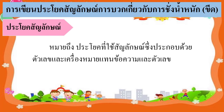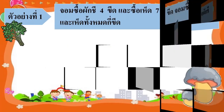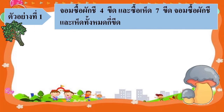ถ้าพร้อมแล้ว เราไปดูตัวอย่างกันเลยนะคะ ตัวอย่างที่หนึ่ง จอมซื้อผักชี 4 ขีด ซื้อเหตุ 7 ขีด จอมซื้อผักชีและเหตุทั้งหมดกี่ขีด จากโจทย์ปัญหาในข้อนี้นะคะ